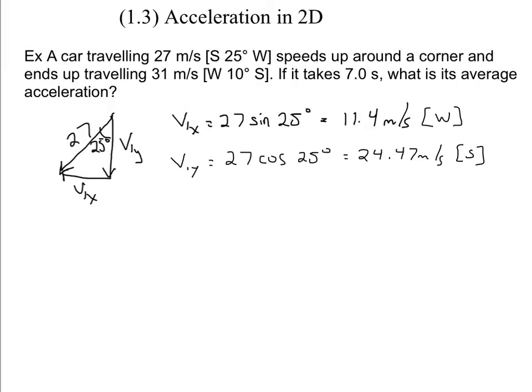I'll switch colors here just so you can see the second one. Exact same idea. It mentions up here that it's going west, 10 degrees south. So here's a straight west line. Here's my vector. There is 10 degrees and 31 meters per second. In that case, I've got v2 in the x direction and v2y.